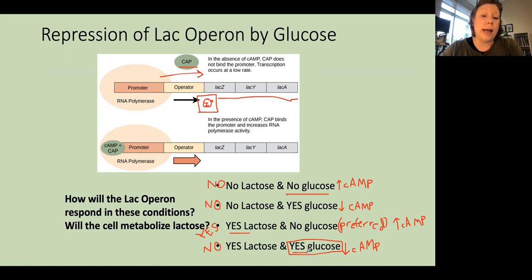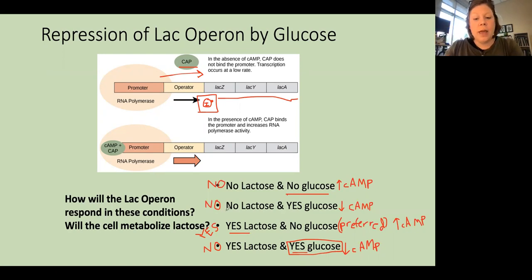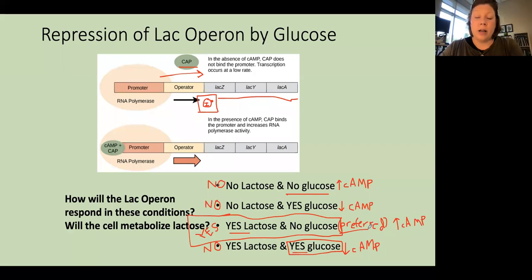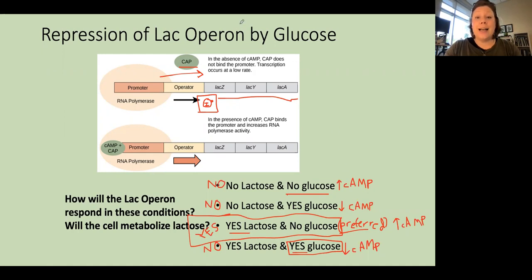The only time the lac operon really gets turned on at high volume is when we have lactose present in the environment but no glucose — none of our preferred metabolic substrate. I hope this example helps you think about how the lac operon is regulated not just by lactose, but also by the presence of glucose in the environment. Bring your questions to class!